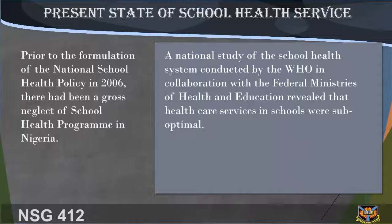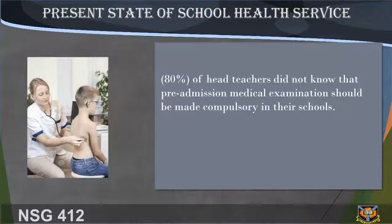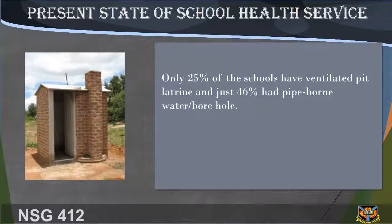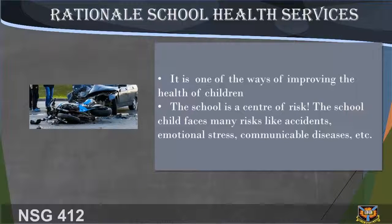Prior to the formulation of the National School Health Policy in 2006, there had been gross neglect of the school health program in Nigeria. A national study of the school health system conducted by the WHO in collaboration with the Federal Ministries of Health and Education revealed that health care services in schools were suboptimal. A high proportion — 80 percent — of head teachers did not consider pre-admission medical examination compulsory. Food and water were screened in only 17 percent of schools. A high proportion — 83 percent — of schools did not have school nurses, only 6 percent had linkages with government-designated clinics, only 25 percent had ventilated pit latrines, and just 46 percent had pipe-borne water or borehole access.